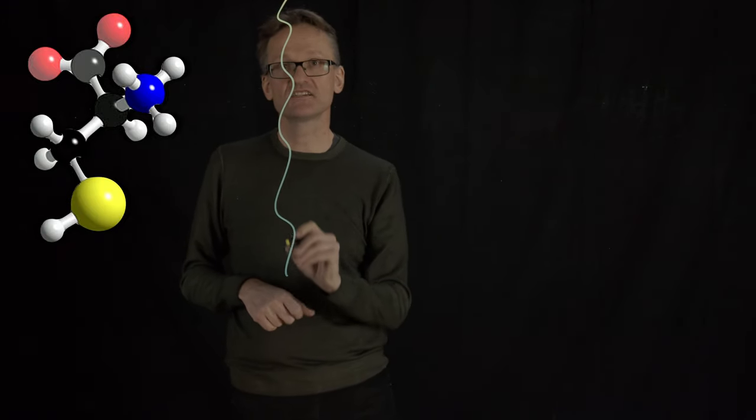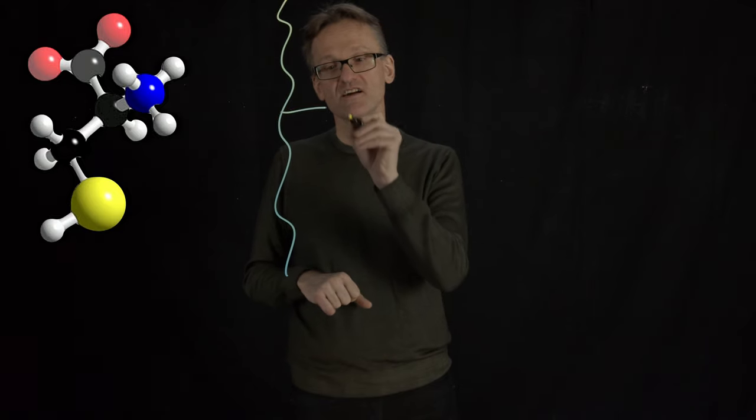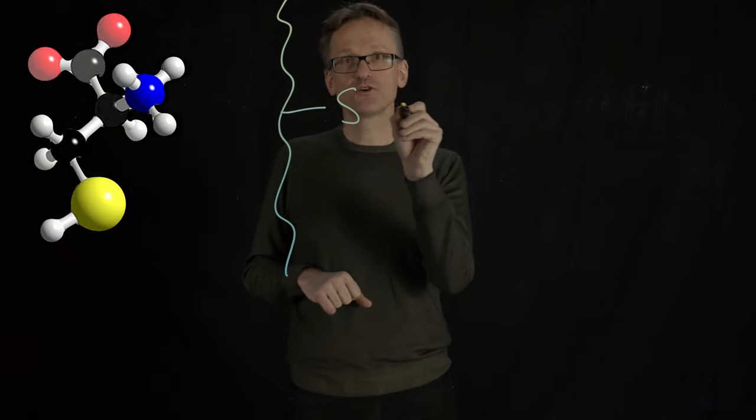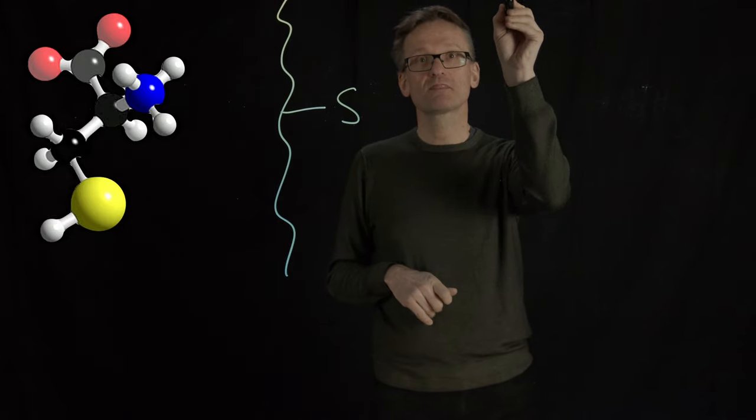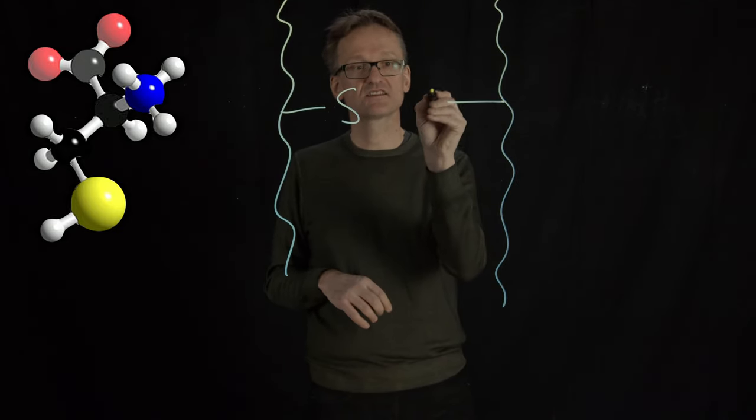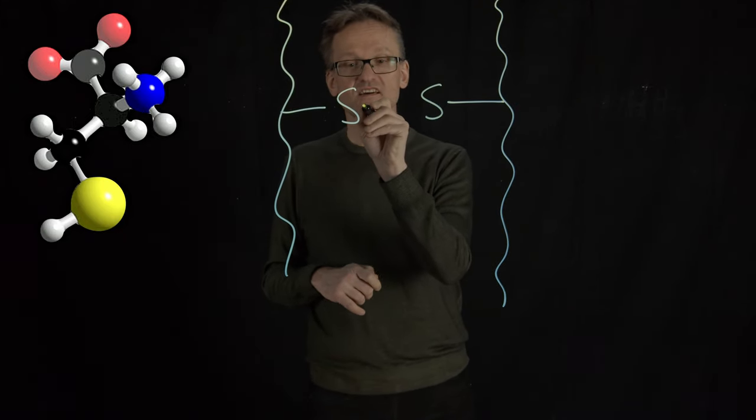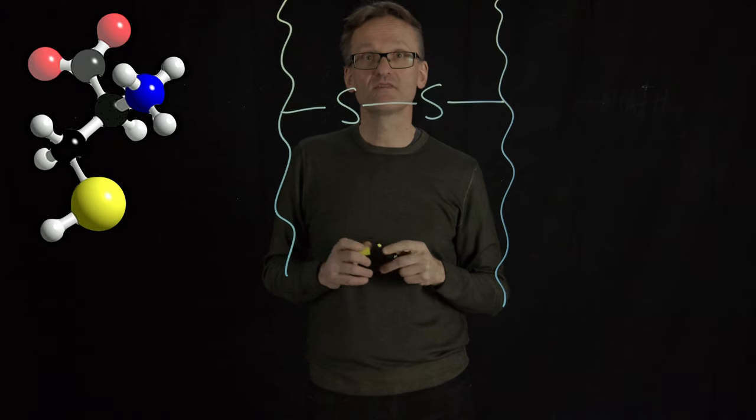So if I have a chain here and then I have a cysteine here, that sulfur would normally have a hydrogen but I'm deliberately not drawing that one now. I'm having a second chain here that also has a cysteine. What can happen is that this can form a bond.